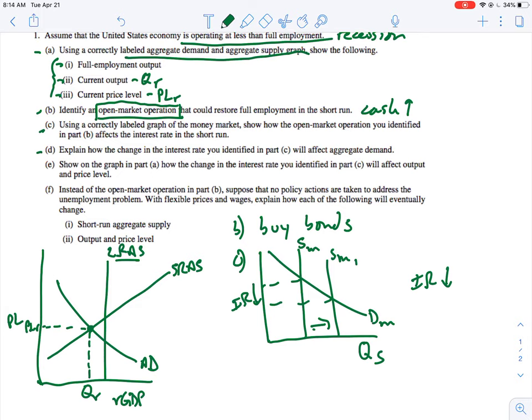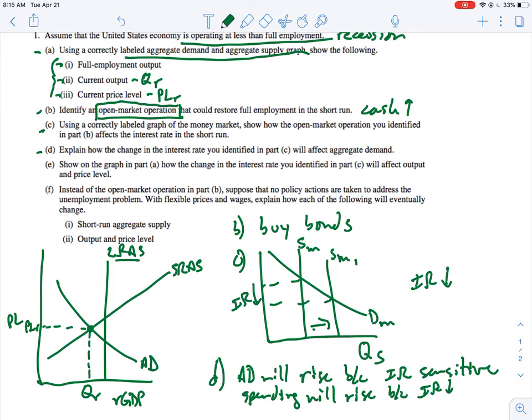All right, on to part D. Explain how the change in the interest rate will affect aggregate demand. So for D, AD will rise because interest rate sensitive spending will rise because IR, the interest rate, went down. So you could certainly talk about capital stock here, that's IG, but then also you've got interest rate sensitive consumer spending, which we know is a little bit smaller. IG is very heavily influenced by this, but consumer spending is less influenced but influenced nonetheless.